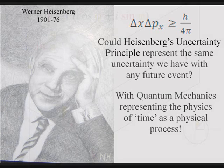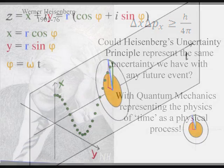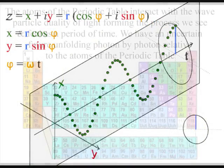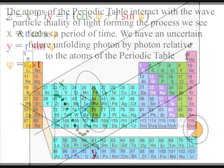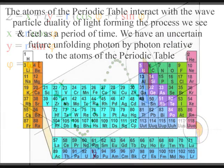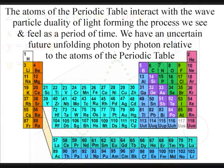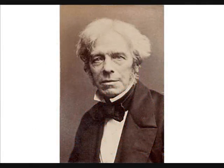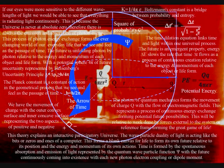Basically, what we are seeing is the creation or formation of electromagnetic waves, or sine waves, relative to photons interacting with the atoms of the periodic table. The dynamic geometry of this three-dimensional process can be linked to the work of Michael Faraday, with the letter Q in the diagram representing charge. The photon of quantum mechanics forms the movement of charge, with the continuous flow of electromagnetic fields.